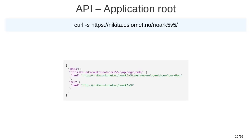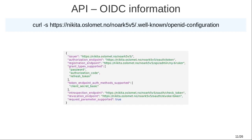So if we hit the root of the application with a GET request, you basically get back a link to an OpenID Connect information endpoint that will give you an idea of how to log on. If we hit that OpenID Connect endpoint, we see endpoints for authorization — this is the endpoint you're going to use to log on — registration if you want to create an account, token introspection, and token revocation if you want to log off.